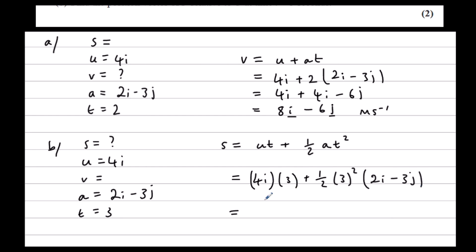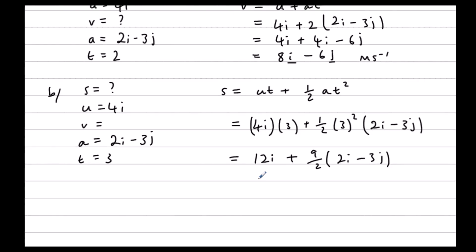So we have 12i plus, I've got 3 squared, which is 9, half of that 9 over 2 times 2i minus 3j. So 12i plus, expanding the bracket,